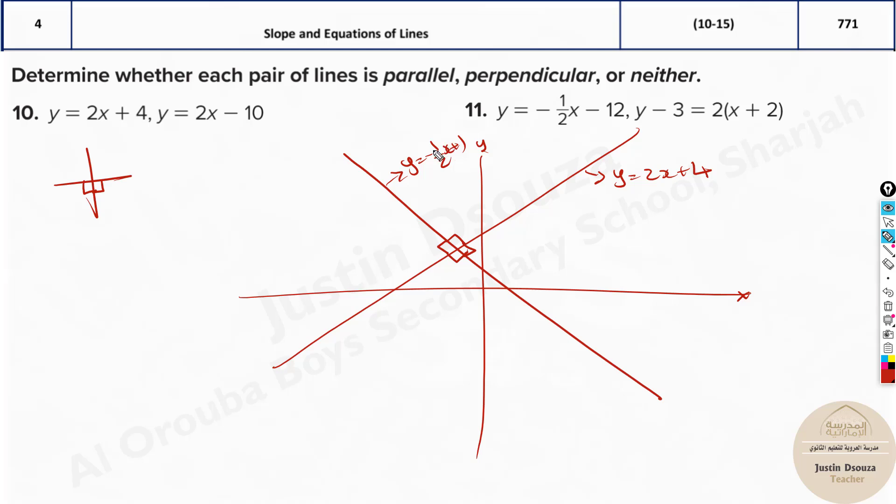Whenever you have two lines, if you multiply their slopes—what is the slope? Whatever is the coefficient of x. Let's multiply the slopes: negative one-half times 2. It becomes negative 1. If you get negative 1 as the answer, then they are perpendicular. This is the easiest way to find perpendicular lines. The most important thing is writing the equation in slope-intercept form.